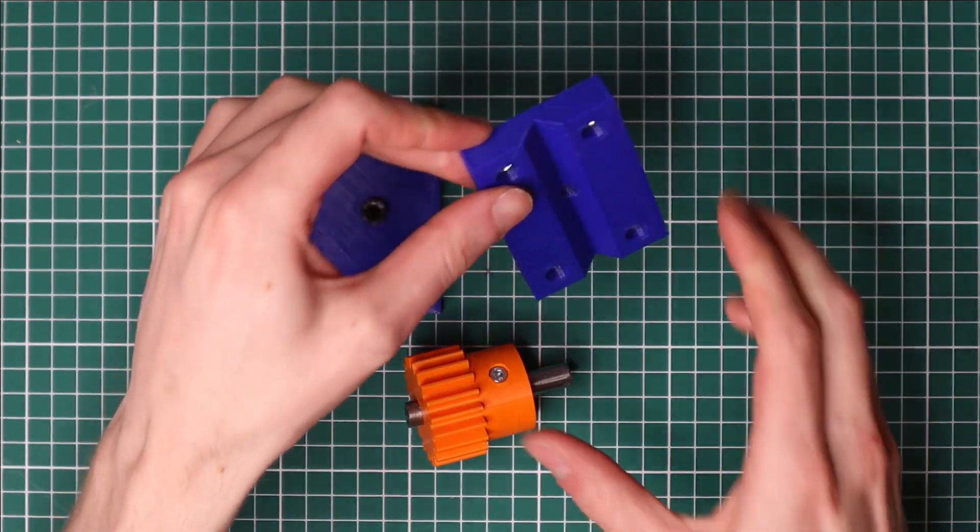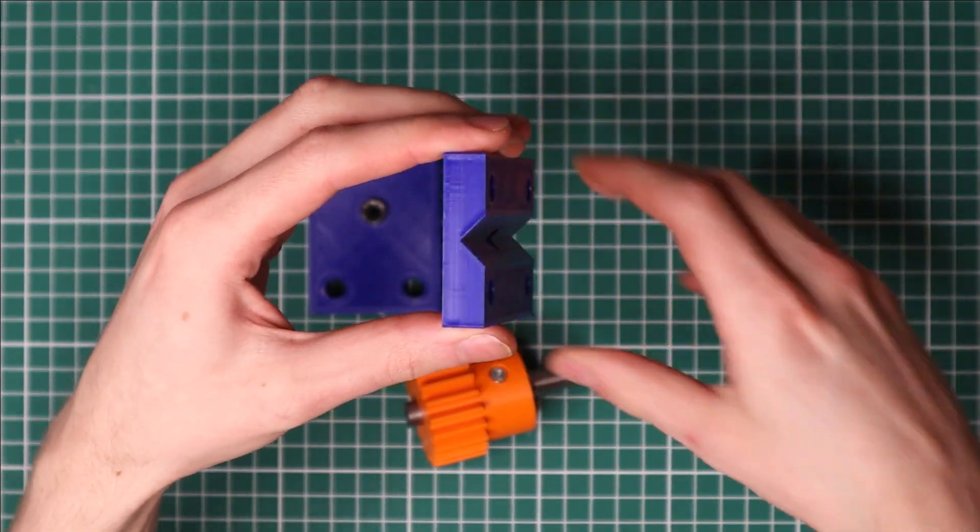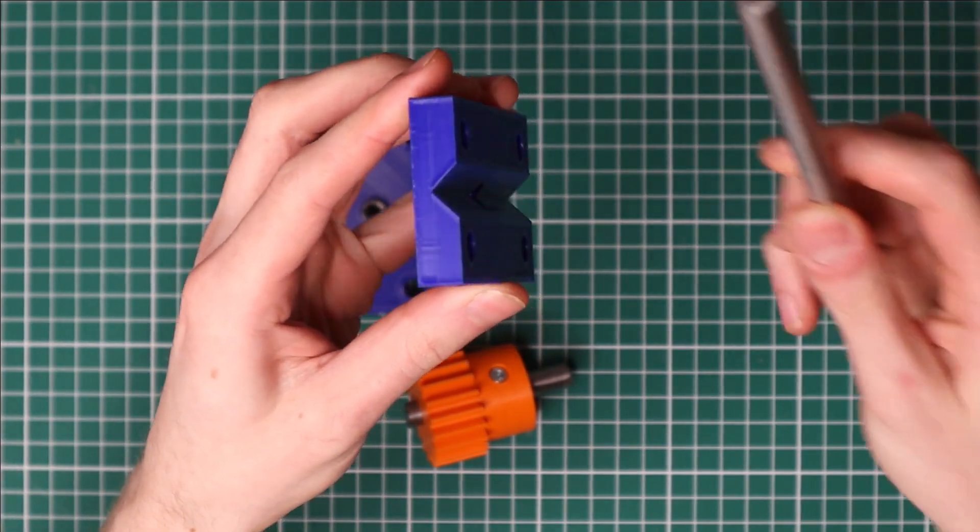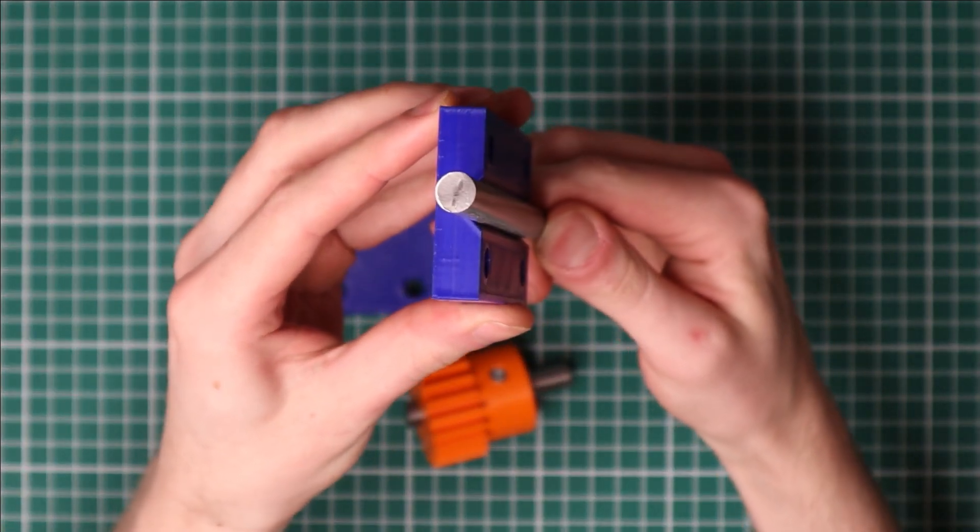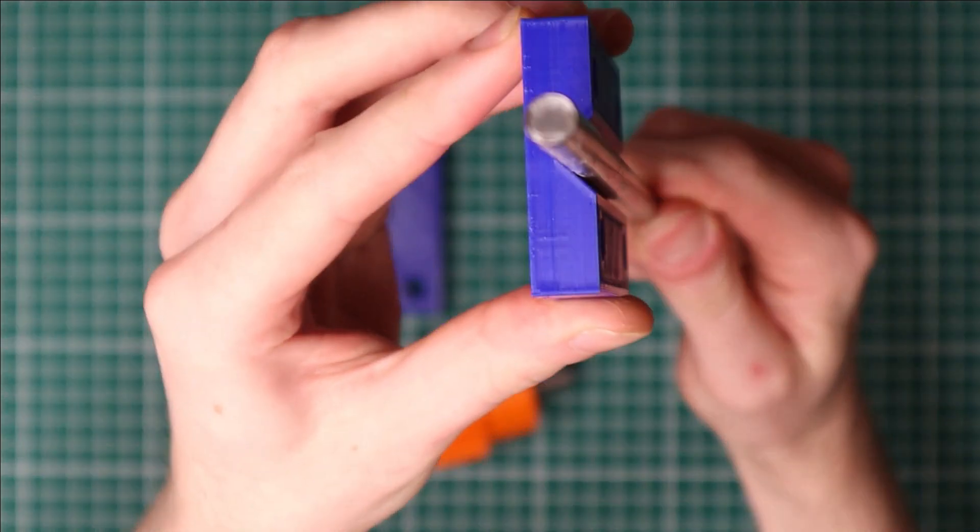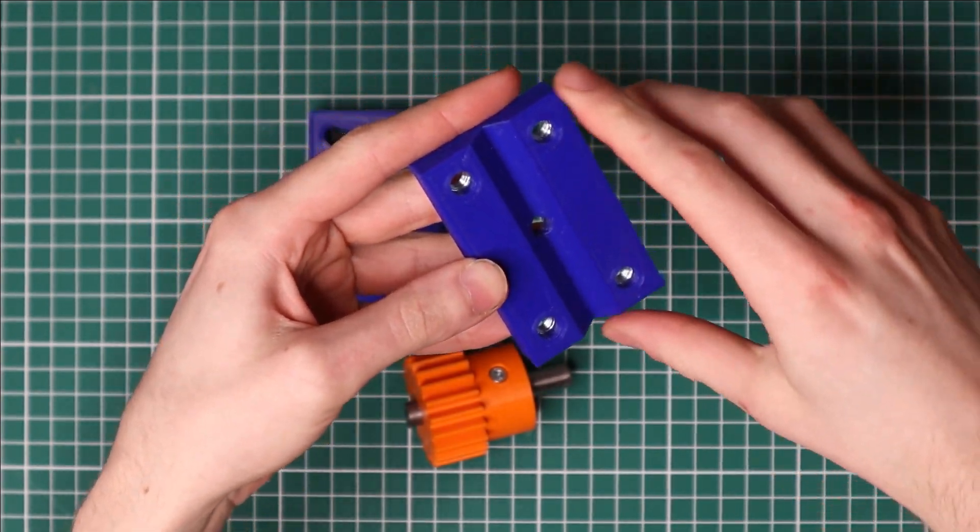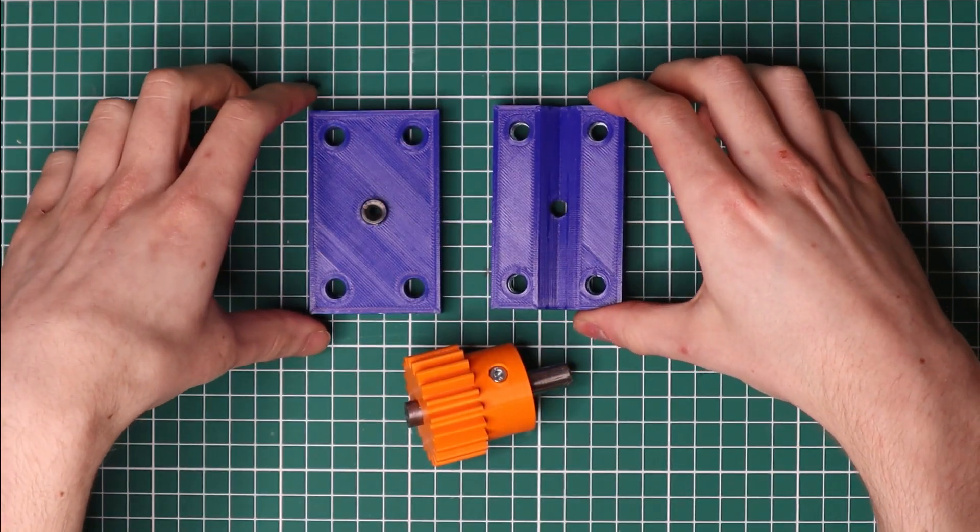The first improvement is that the slot for the shaft is now V-shaped, which allows the jig to accept various sizes of shaft like this 10 millimeter shaft but also this 8 millimeter shaft. This particular jig should be able to accept any shaft between 6 and 12 millimeters in diameter.